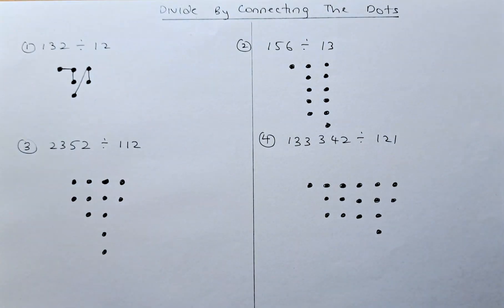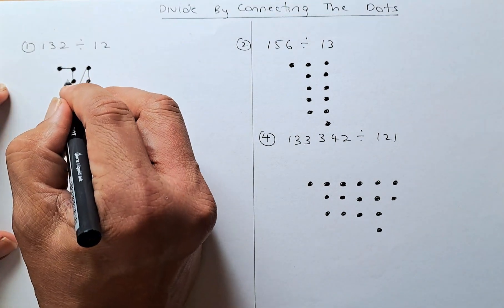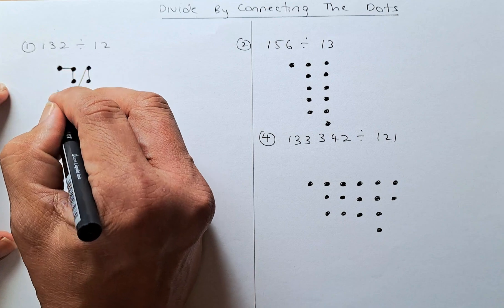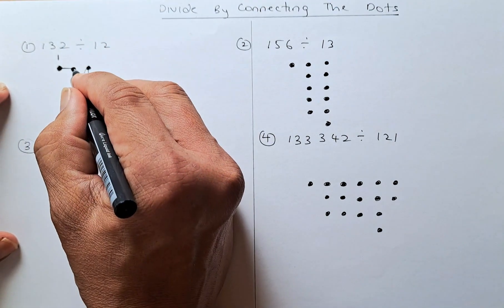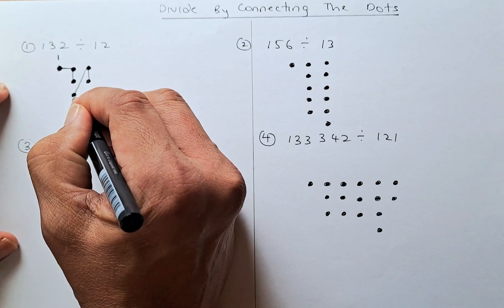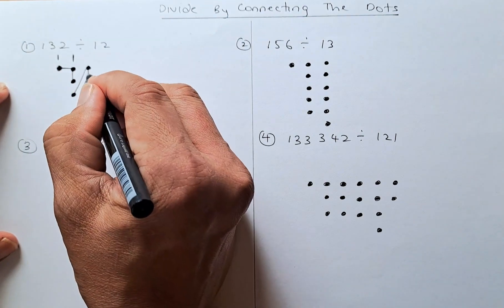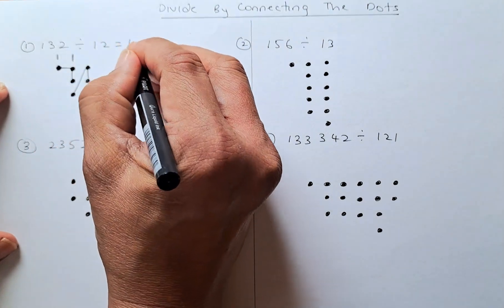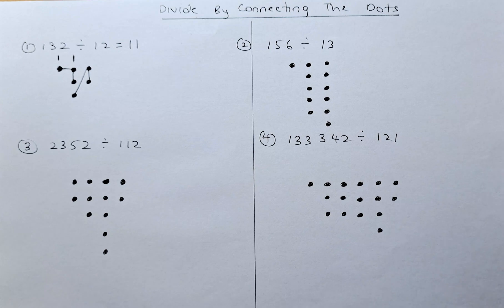To calculate the result, you just count where the starting points are. This point is a starting point, so only one — put one. In the next column, this is not a starting point, this is not a starting point, this is a starting point — so another one. And these two are not starting points, so leave it as nothing. The answer is 11. So 132 divided by 12 is 11.